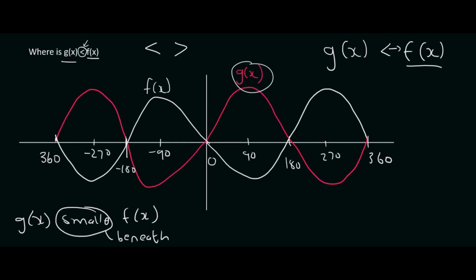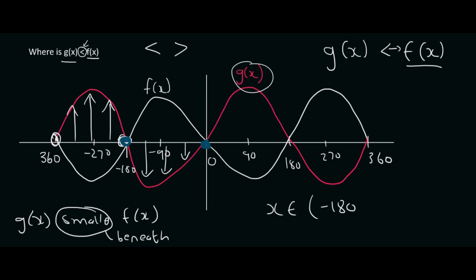g of x is the pink one, so where is the pink one below the white graph? From here to here we can see the pink graph is above, so we're not interested in that. But from this point to this point, the pink graph is below — that's what we want. So we can say x is an element going from minus 180 to 0. Then the pink graph is on top again, but from here it goes below. So we can say or 180 to 360.